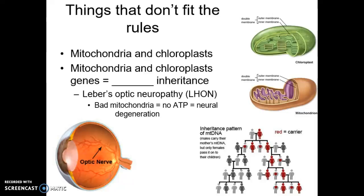So when you look at your mitochondria, that is your maternal DNA. It's a way to track relatedness on your mother's side by looking at mitochondrial DNA — and it's one of those things geneticists noted just doesn't fit the regular genetic rules. An example of how we apply this is a condition called Leber's Optic Neuropathy, or LHON.